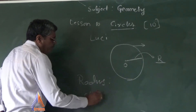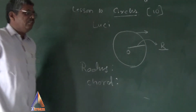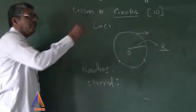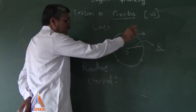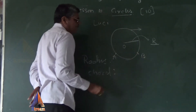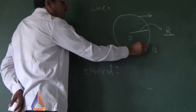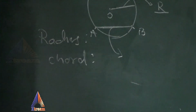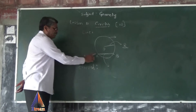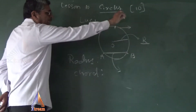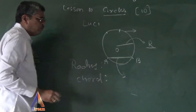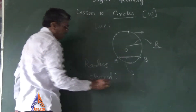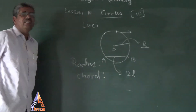Next definition: chord. Any two points on the circumference of the circle — wherever you mark them, say point A and point B — the line segment joining those two points on the circumference is called a chord of a circle. A chord is denoted by the letter 2L.